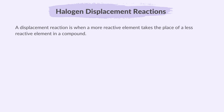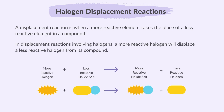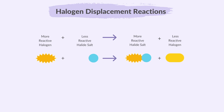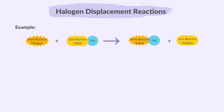A displacement reaction is when a more reactive element takes the place of a less reactive element in a compound. In displacement reactions involving halogens, a more reactive halogen will displace a less reactive halogen from its compound — specifically from its halide salt. The less reactive halogen is displaced by the more reactive halogen.